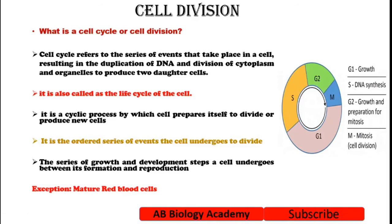One exception is mature red blood cells — natural red blood cells do not undergo cell division. When a red blood cell matures, its nucleus is expelled. So that cell will not divide during its mature stage; it is not capable of division. The information for cell division is present in the nucleus, so without a nucleus there is no cell division.